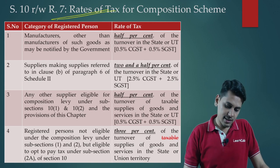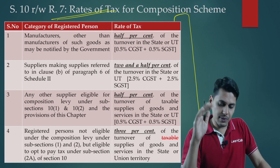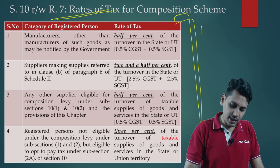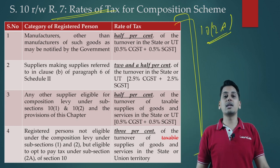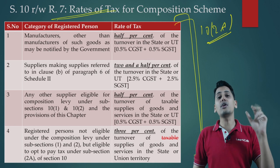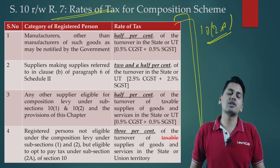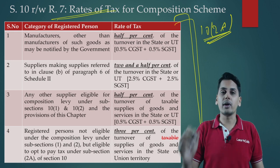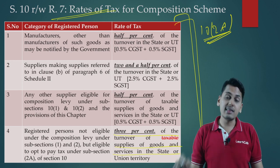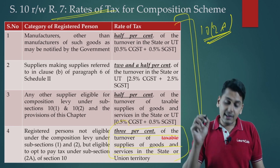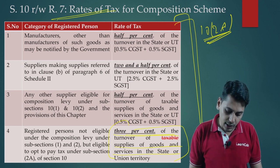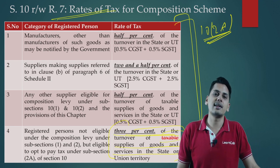This is a corrigendum specifically for LearnCab students. As regards Section 10(2A), the special composition scheme for service providers — in the LearnCab lectures, it was mentioned that the rate of tax is 3% of the turnover of taxable supplies of goods or services in the state or union territory.